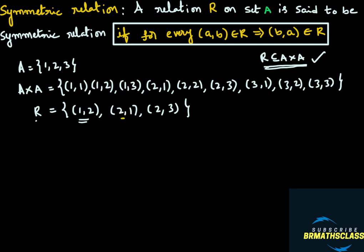Now we have to check for every ordered pair in R. We have to check for ordered pair (2,3) also. Ordered pair (2,3) is there in R, but is ordered pair (3,2) there in this relation? We can easily say that ordered pair (3,2) is not there in this relation, so we say that this relation R is not symmetric.